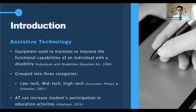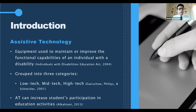Let's start from the very beginning — what is assistive technology? Assistive technology is any piece of equipment used to increase, maintain, or improve the functional capabilities of an individual with a disability. Gancho and colleagues grouped assistive technology into three categories: low-tech, mid-tech, and high-tech.